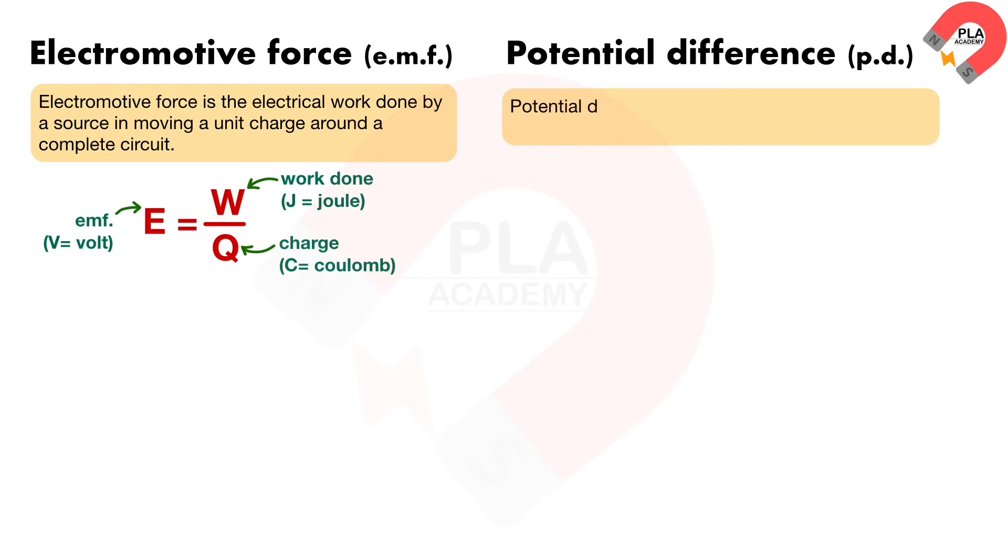Potential difference, or PD: Potential difference is the work done per unit charge, that passing charge through a component.